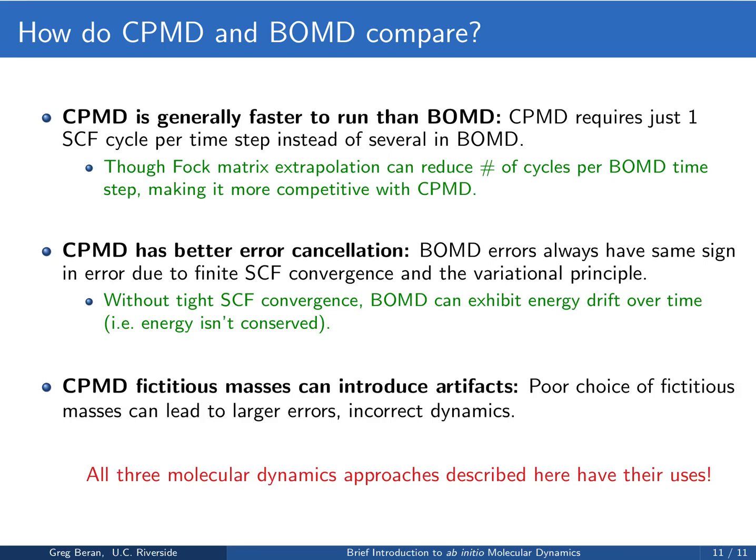CPMD also potentially has better error cancellation. One problem with BOMD is that based on the variational principle, when we converge our SCF equations at each time step, we're always coming in from above and always making some finite error. If you're too loose in that finite precision to make your calculation fast, you'll have systematic errors at each time step where your energy is a little too high, leading to energy drift — meaning your energy is no longer conserved in your dynamics. CPMD doesn't have that problem because its errors are more random — sometimes above, sometimes below — so hopefully there's less systematic error and therefore less energy drift.